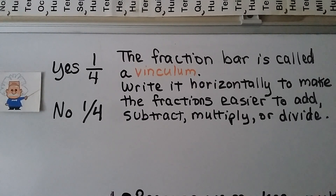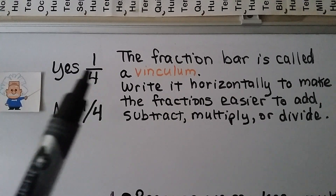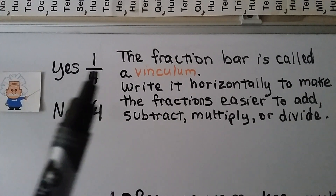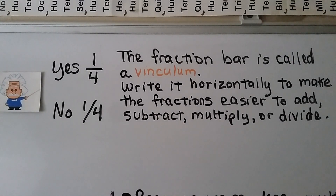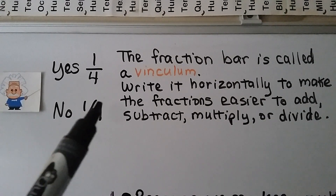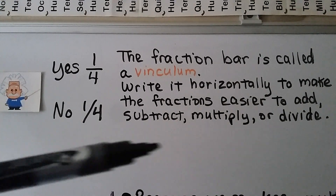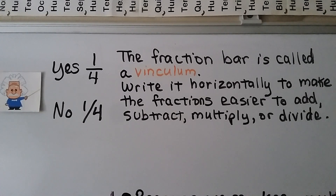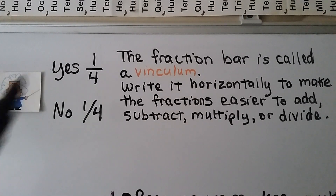When you're writing your fractions, this bar is called a fraction bar — it's also called a vinculum. We need to write it horizontally. It'll make it easier to add, subtract, multiply, or divide the fraction. You might want to put it on a slant, but when we start doing addition and subtraction, trying to go across from numerator to numerator, that could make it confusing. So make sure you write them going horizontally, and that'll help you all the way up into high school doing algebra.